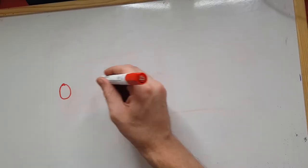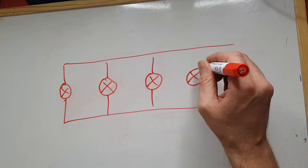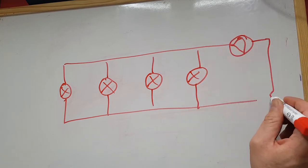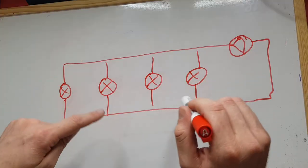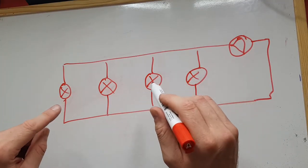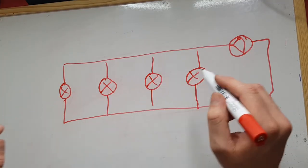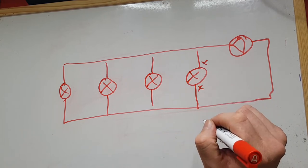So what do we mean by pressure independent control valves? Let's say we've got four valves on the same circuit. You can set these valves to allow a set flow rate through, and these valves will only allow that set flow rate through, regardless of the pressure either side of the valve.